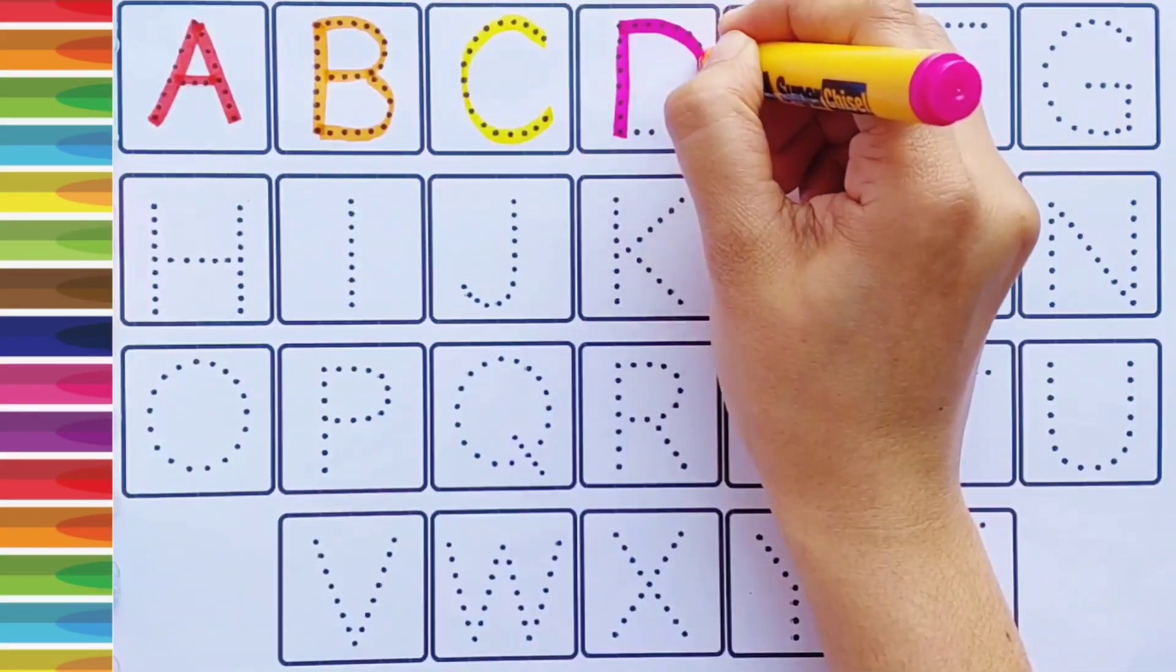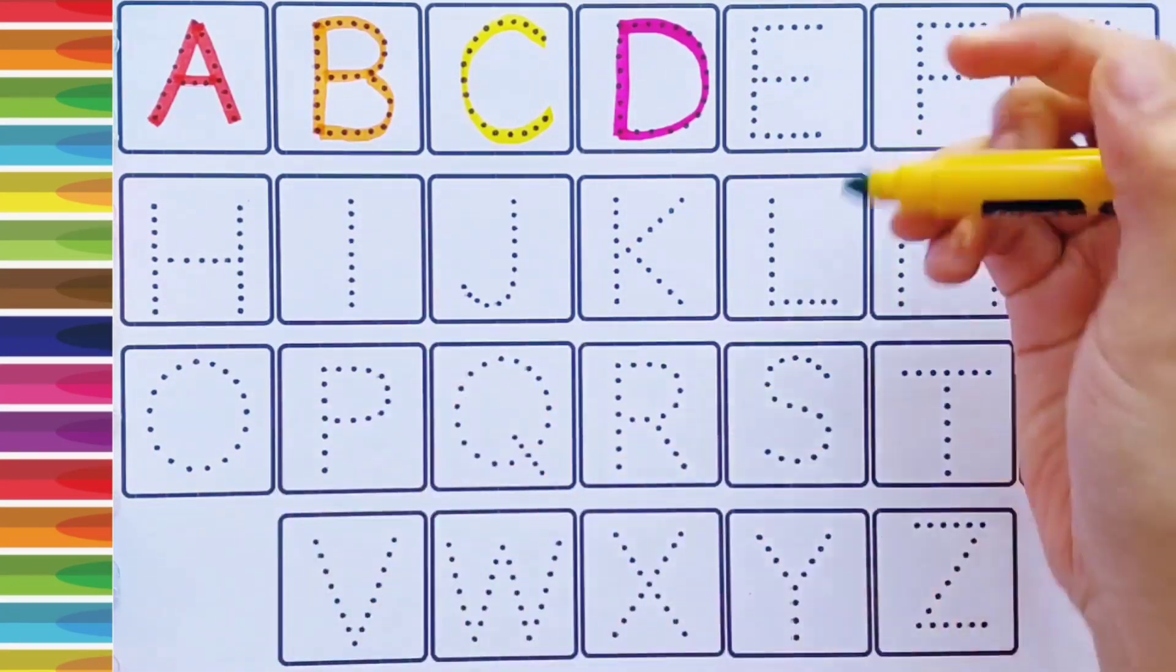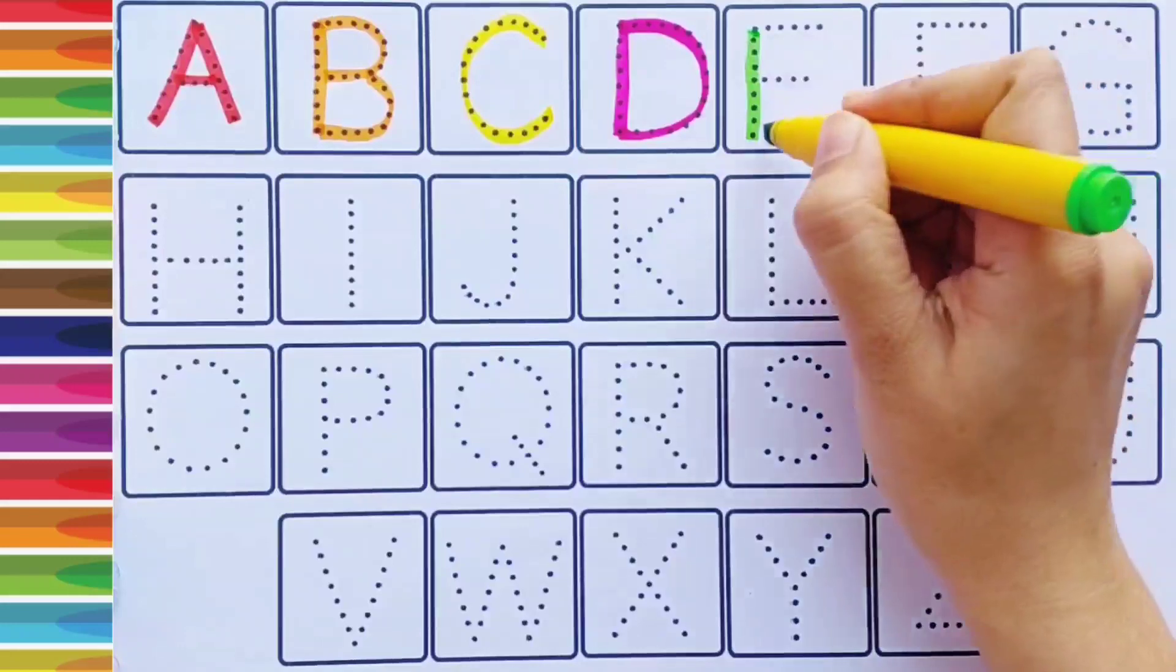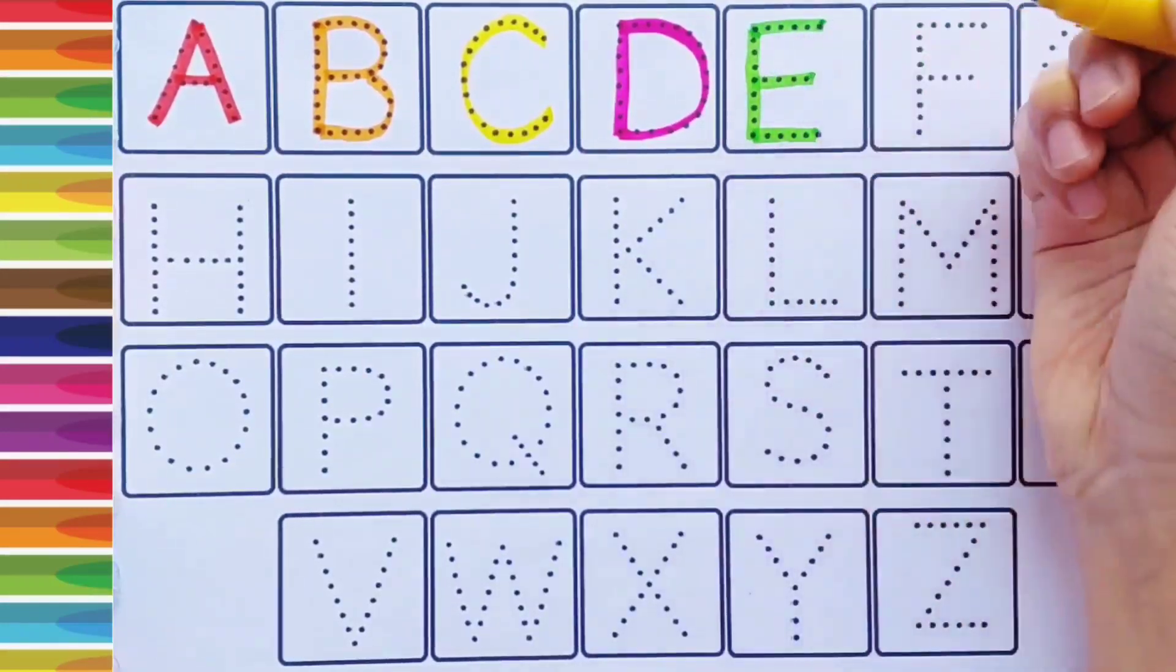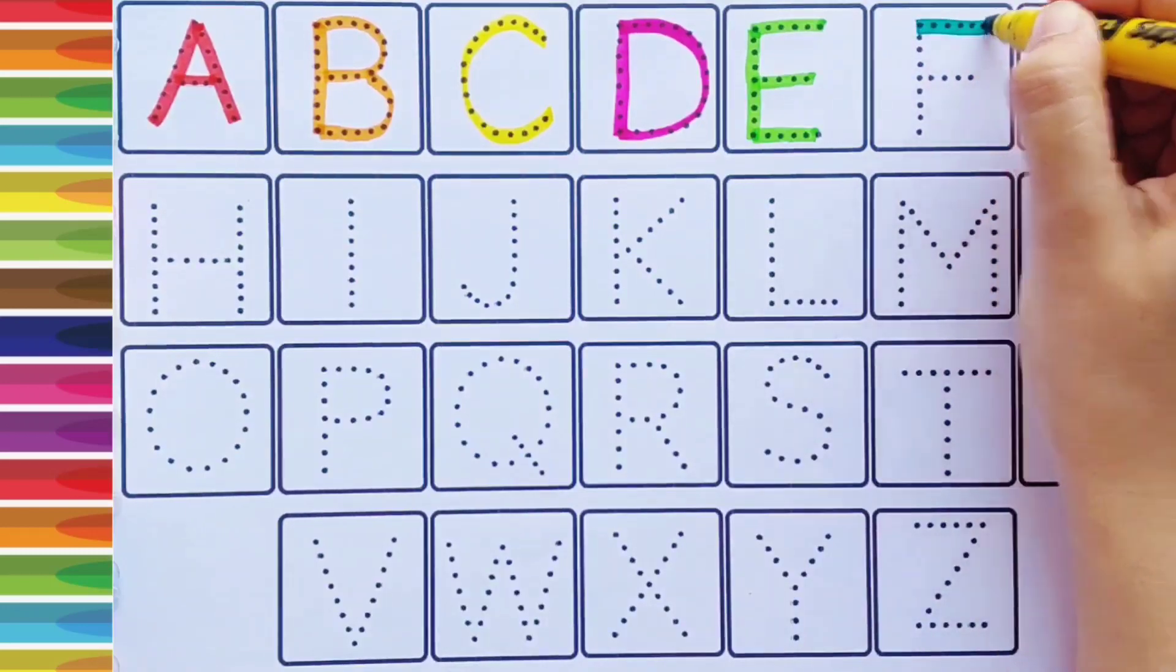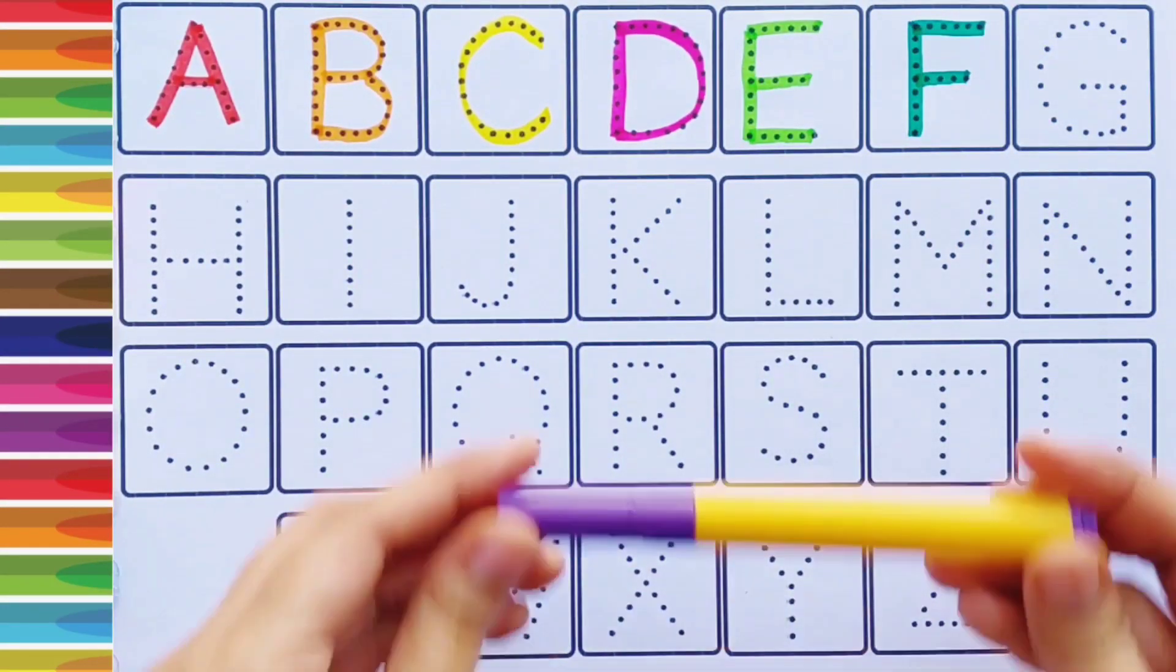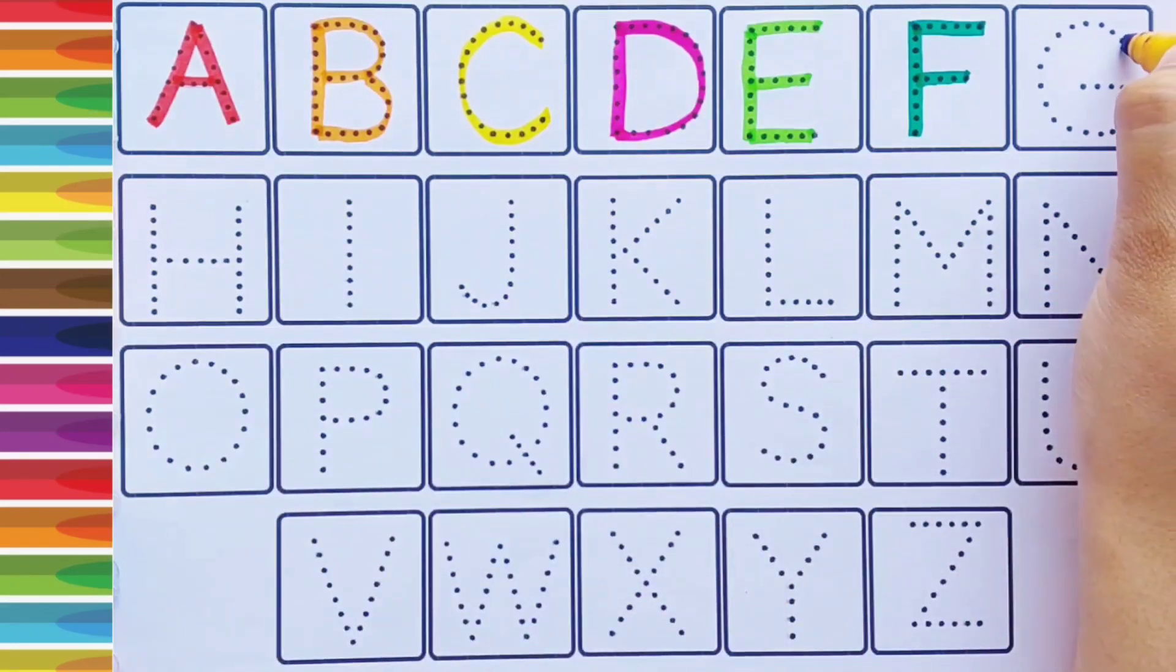D, D for dog, light green color. E, E for elephant, green color. F, F for fish, purple color. G,